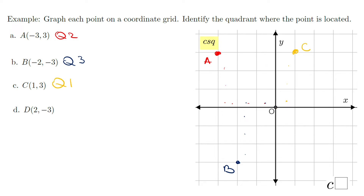The next point is point D, at two and negative three. From the origin, I'm going to move two right and three down. This is point D, which is in quadrant four.